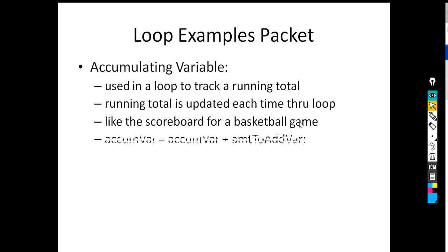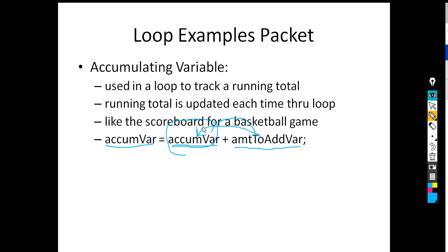It's like a scoreboard. Here's just a template — the accumulating variable is assigned the current value of that running total plus some other variable that's going to add to it. So it takes the current value and adds to it. The next time through the loop it takes its current value, which will have changed, and adds to it again. For example, the variable is assigned 10 at first, then we add 3, so it becomes 13. Next time through the loop, 13 plus 7 equals 20. Then 20 plus 5 equals 25. Each time through the loop it gets increased in that loop.